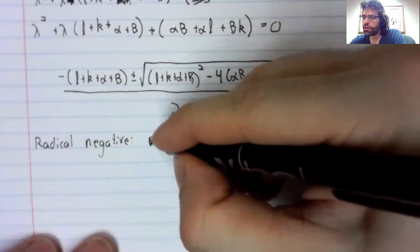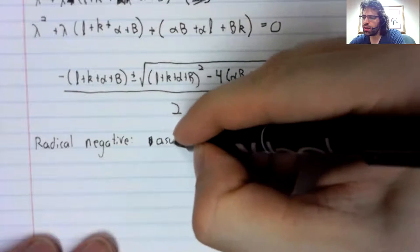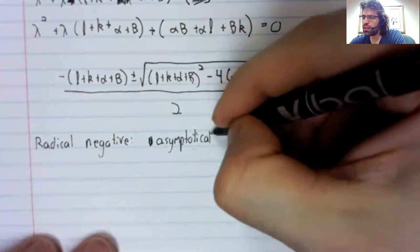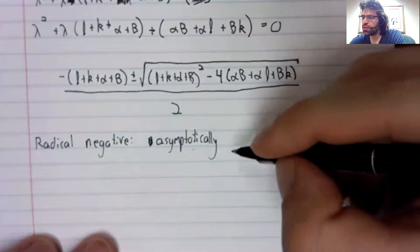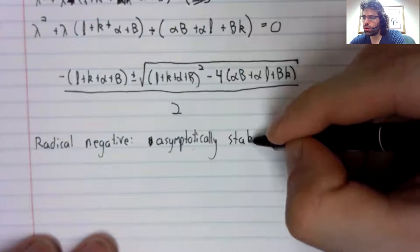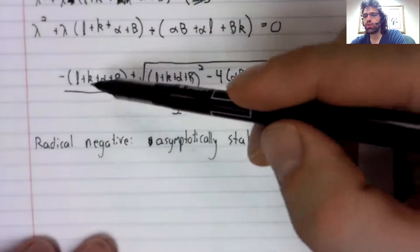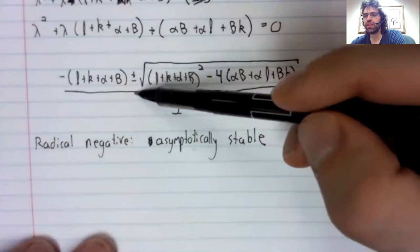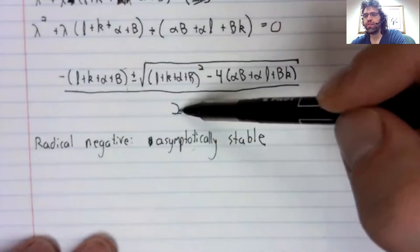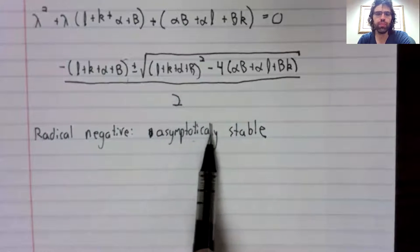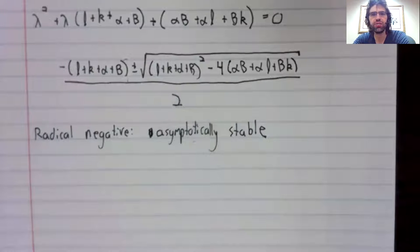It would be an asymptotically stable spiral, because the real part would be this negative number divided by two. So the real part would be negative, making the spiral asymptotically stable.